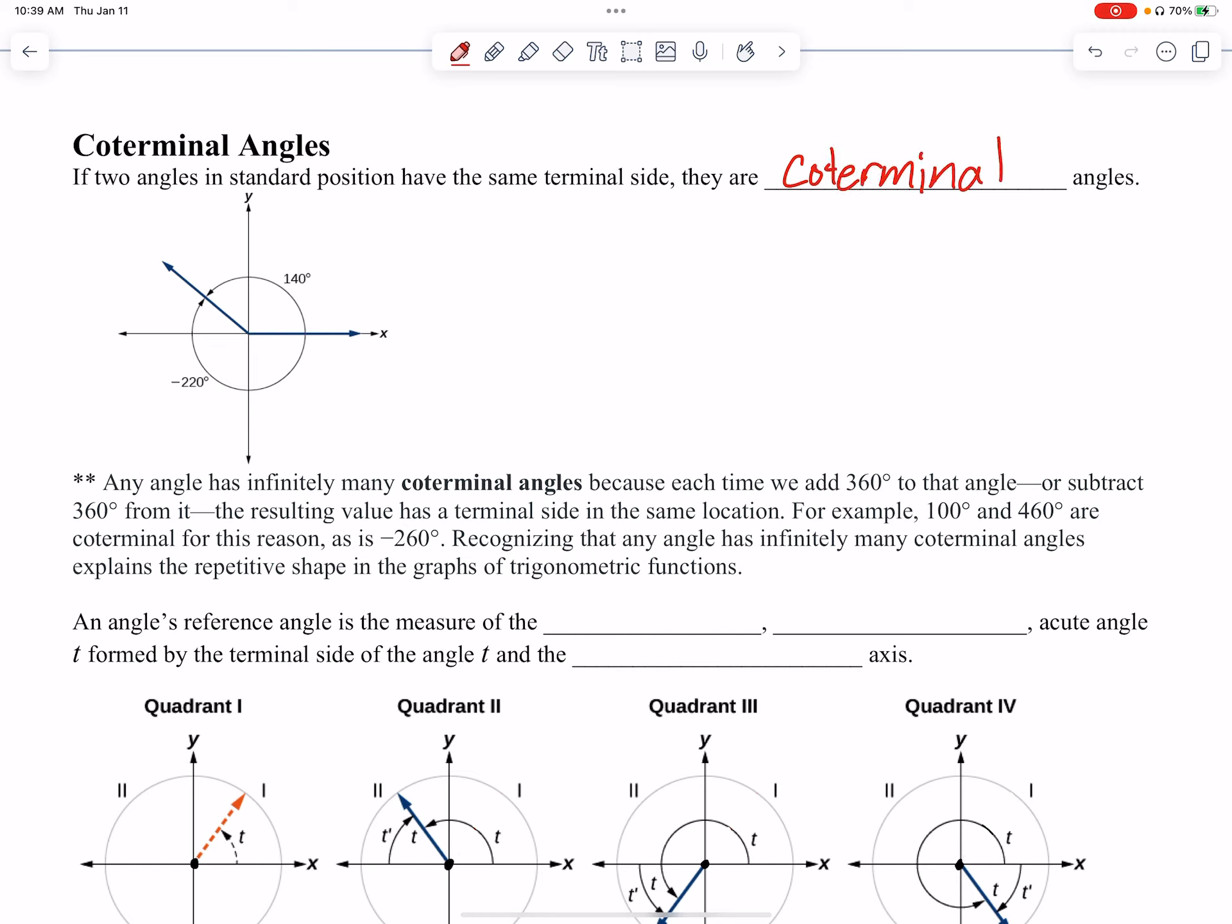Okay, so what this means, if you don't catch it from that definition, is take a look at these two angles that we have here. I have the angle 140° that starts in standard position. I also have, if I do a different color here, negative 220°, and it's negative because it's going clockwise. Those two are coterminal angles because they land on the same terminal side.